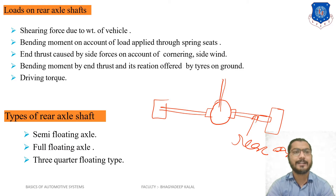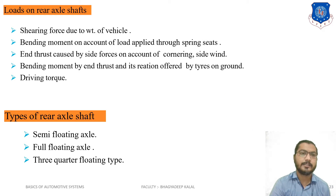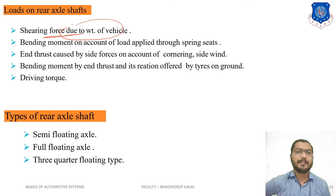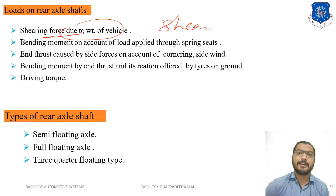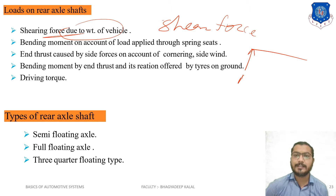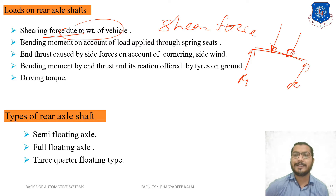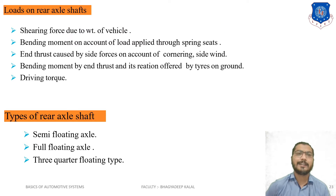The first type of load is shearing force due to the weight of the vehicle. We assume the axle is like a simply supported beam, with reactions on that beam and two forces due to the spring. This is why shear force is induced on the rear axle shaft.